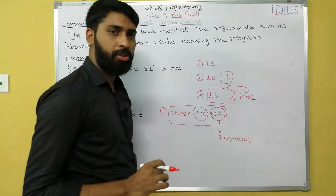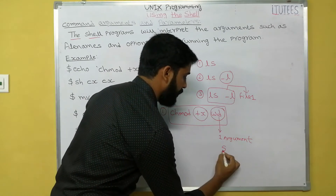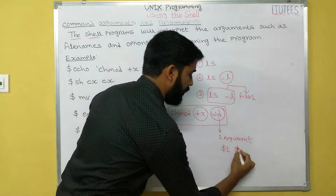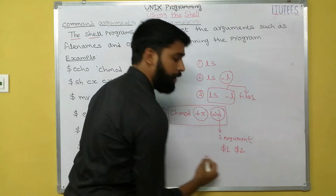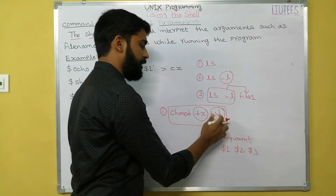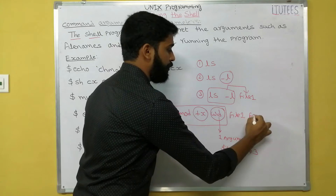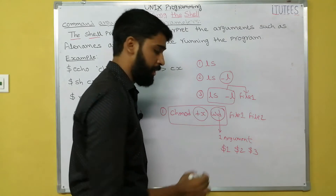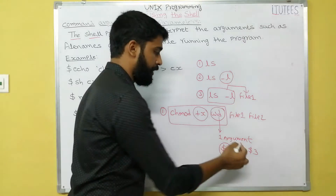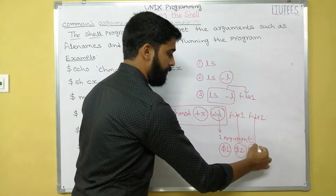How does the Unix operating system identify the arguments? The first argument is identified as $1, the next argument as $2, and the next as $3. For example, if I give wd, file1, and file2, then $1 contains wd, $2 represents file1, and $3 represents file2.